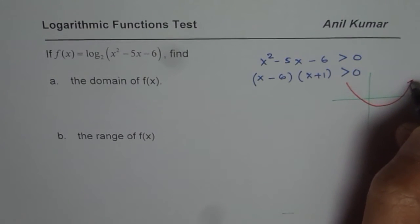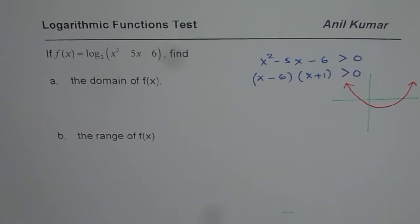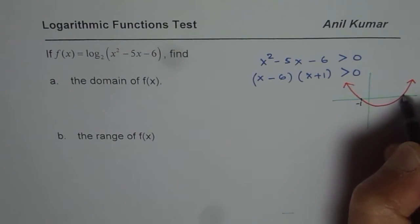So, as you can see from this parabola that the zeros will be at minus 1 and at 6.